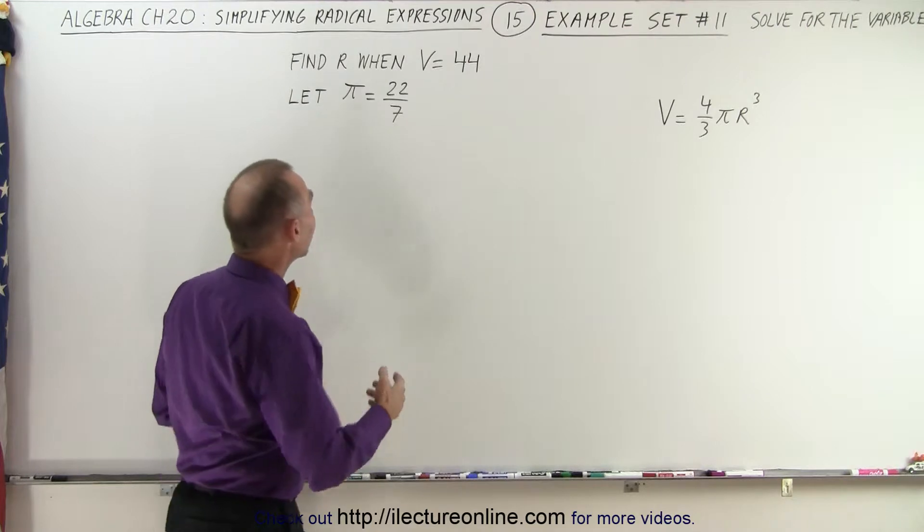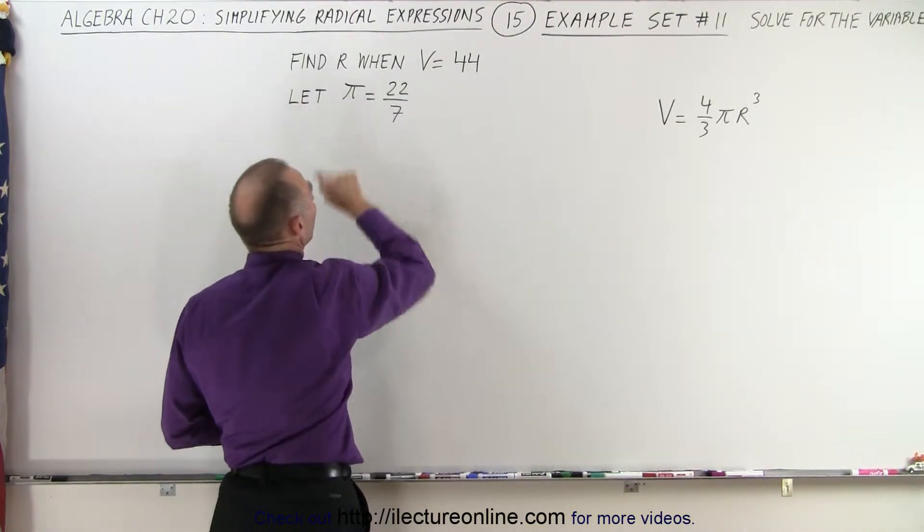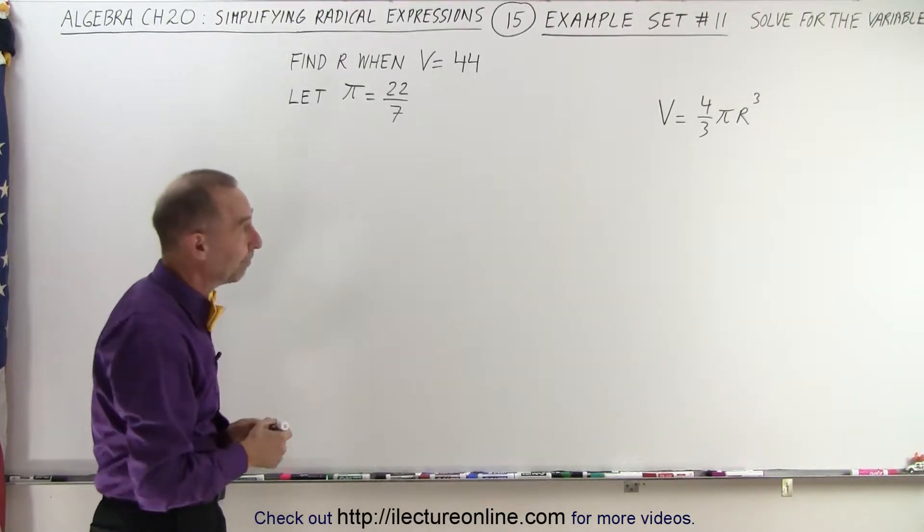So they say that if v is 44, find the value for r, and we're going to approximate pi to be 22 over 7. It's actually pretty close to that.